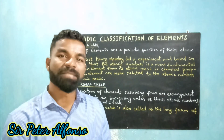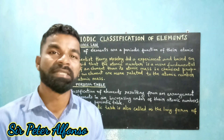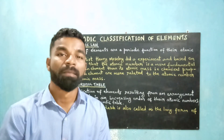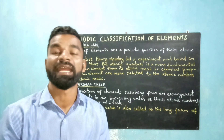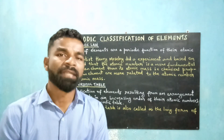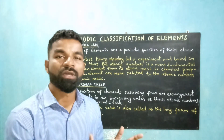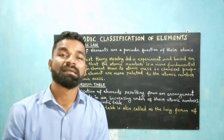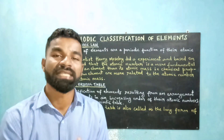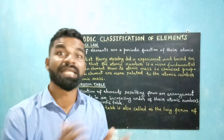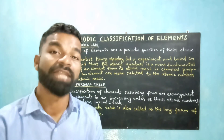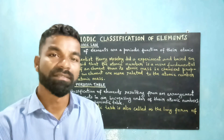When Mendeleev put forth his periodic table, the scientific world did not know anything about the interior of the atom. But the scientists were studying, trying to find out the composition of an atom. On the discovery of the electron, the scientists tried to explore the relation between the number of electrons in an atom and its atomic number.